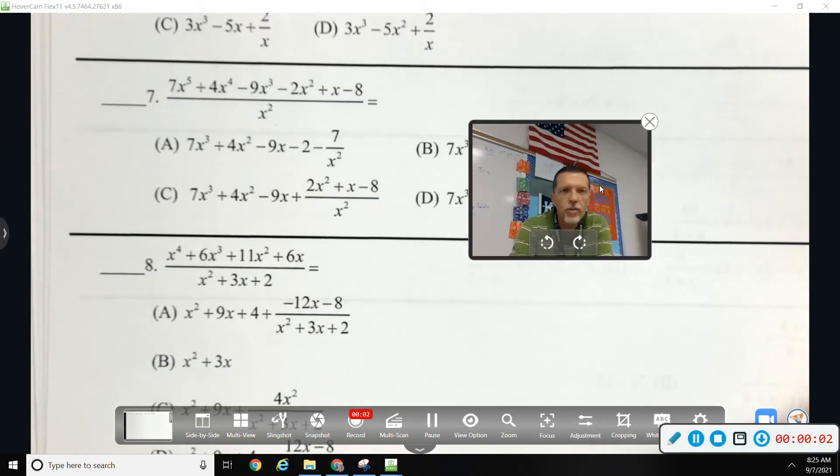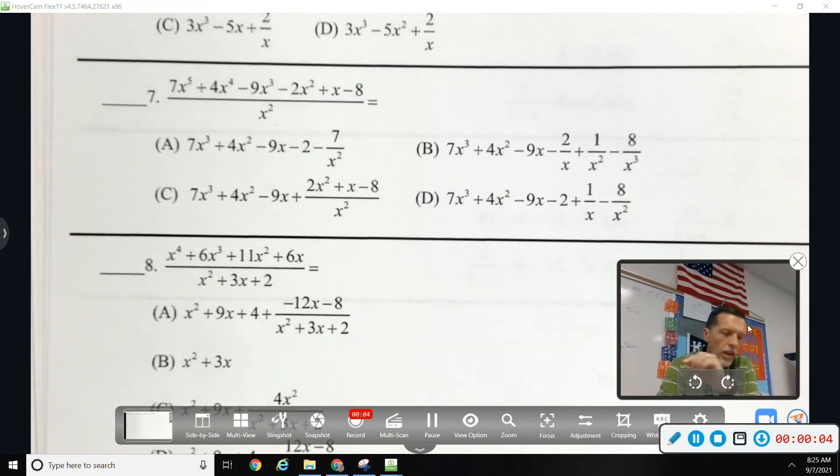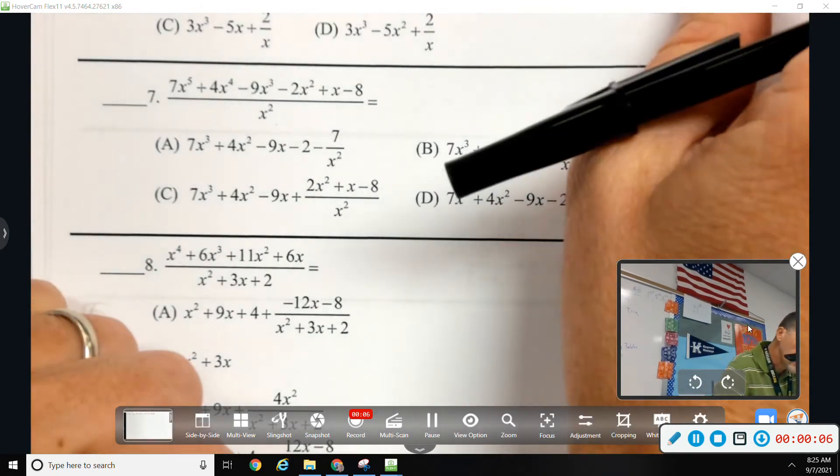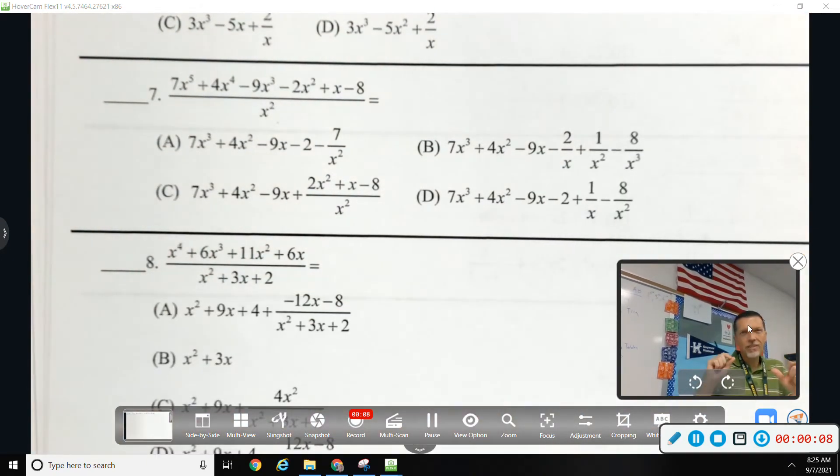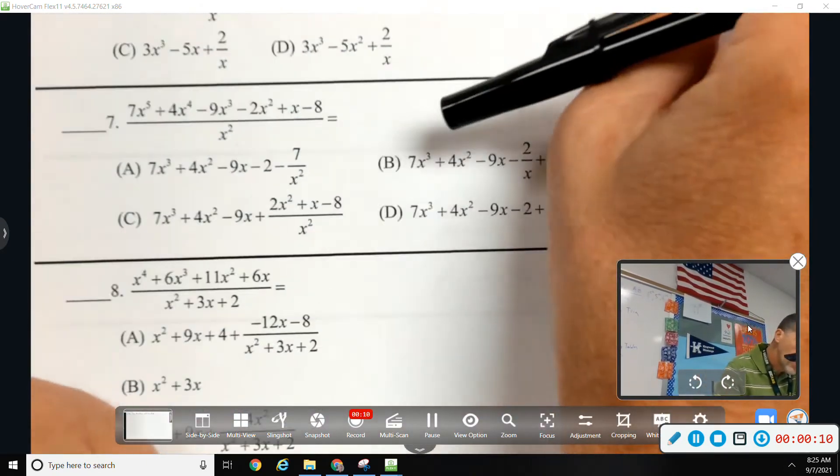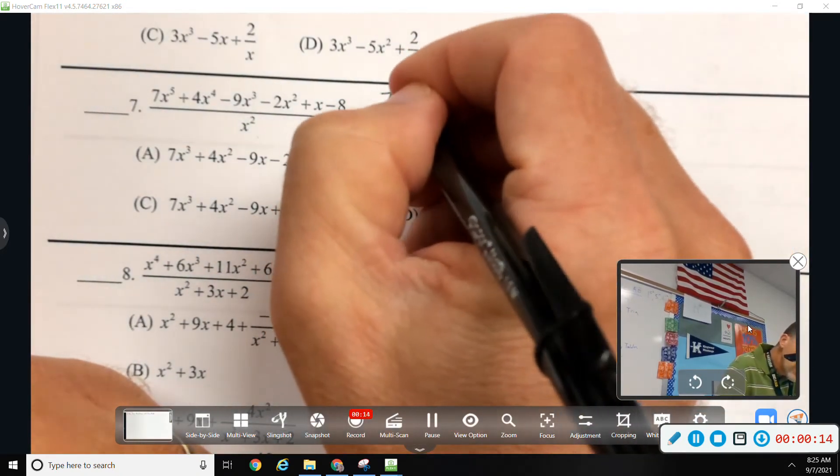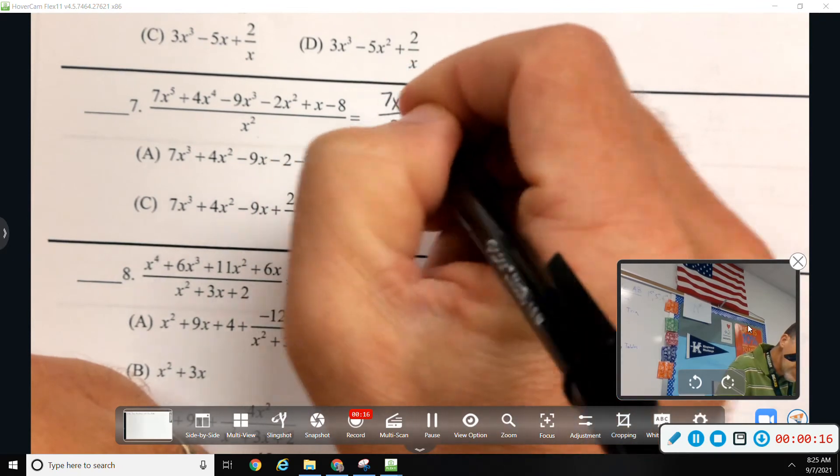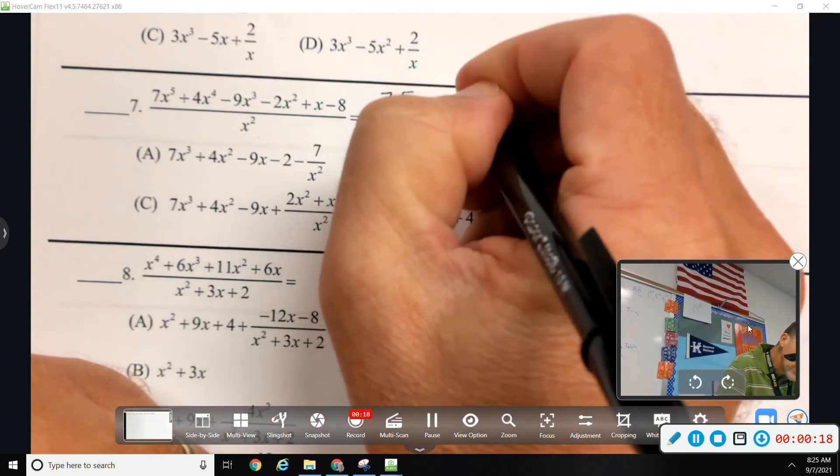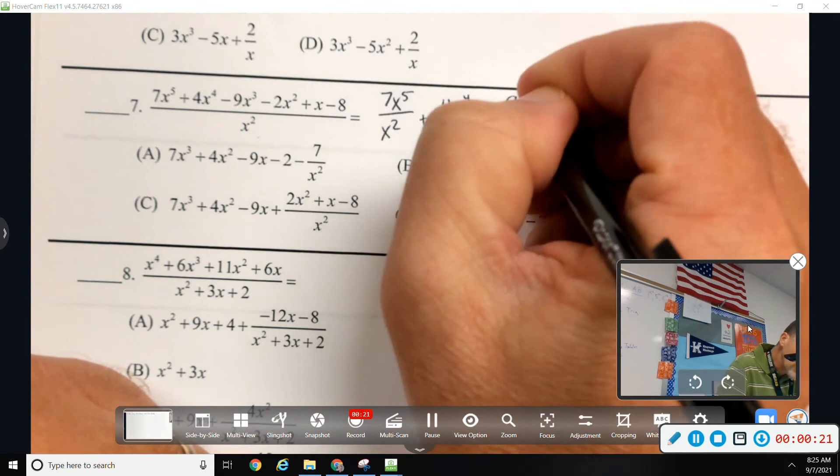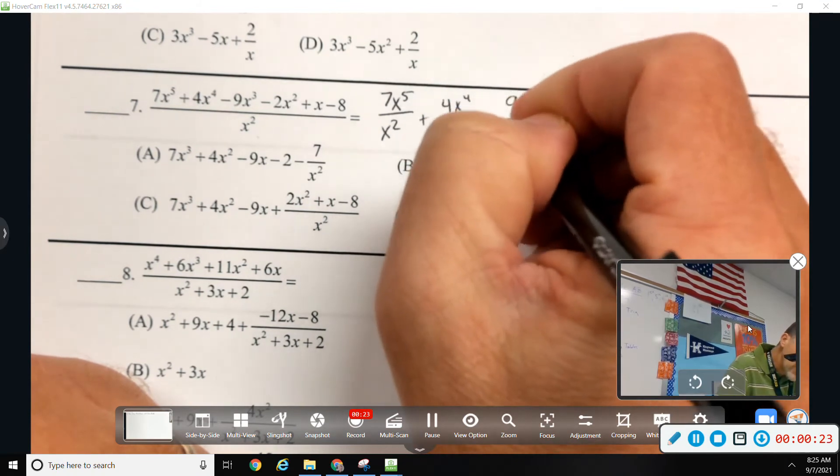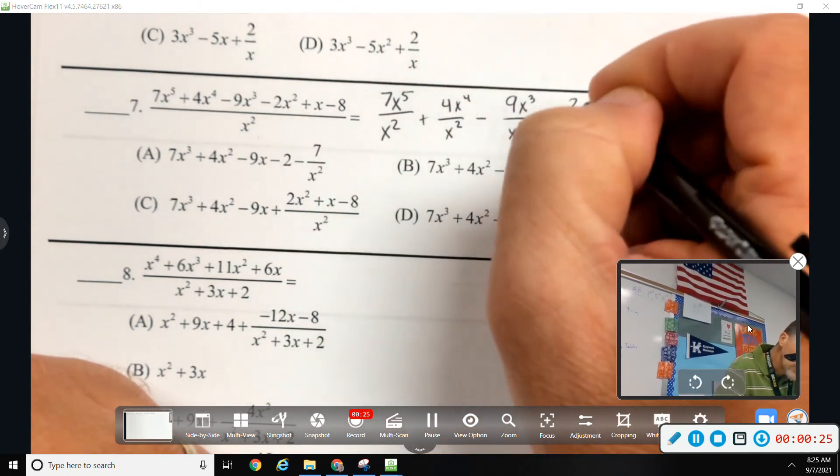So looking at number 7 off worksheet 5, I can put each of them over x squared. Some of you could do that kind of in your head and jump straight to the answer. Since it's the first one, I'm going to show the tedious step of putting every single term over x squared. It's all over x squared. That means I can put each of the terms over x squared.